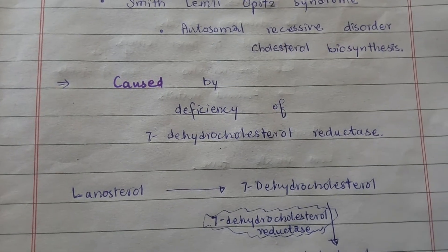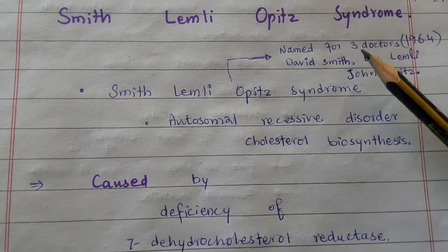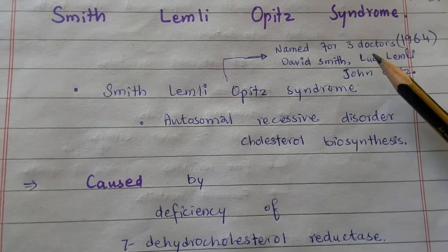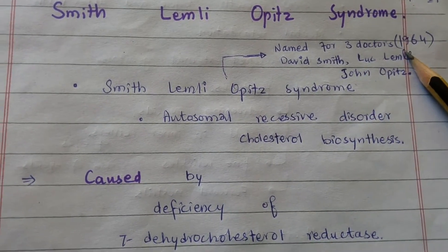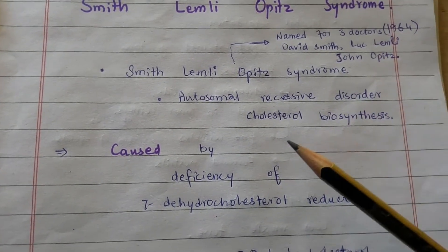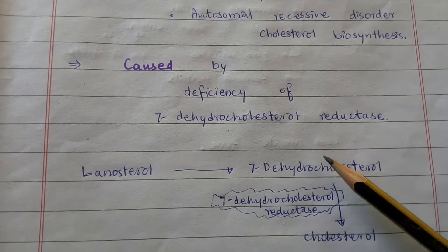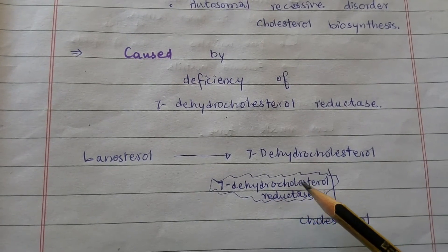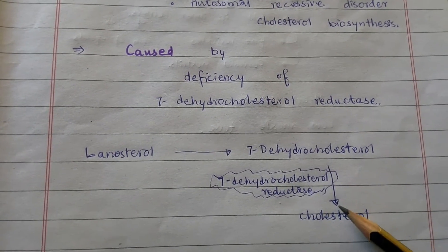Smith-Lemli-Opitz syndrome is named for three doctors — David Smith, Luc Lemli, and John Opitz — who first identified this disease in patients in 1964. The syndrome is caused by deficiency of the 7-dehydrocholesterol reductase enzyme during cholesterol synthesis.